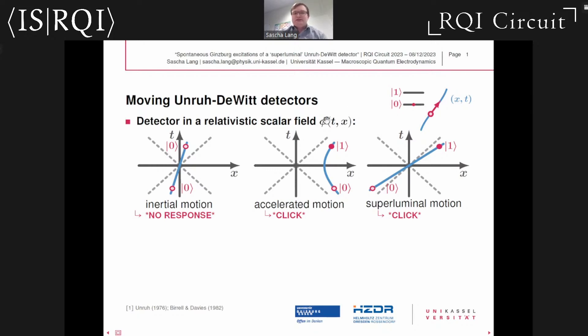There are quite famous results for particle detectors moving through a relativistic one plus one dimensional scalar field in its quantum mechanical ground state. It is known that particle detectors in inertial motion do not have a chance to get excited, so they won't click. The situation is different for accelerated detectors—for example, detectors on uniformly accelerated paths have a chance to click.